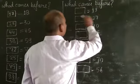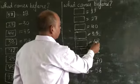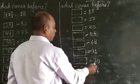What comes before 38? 27, 40, 35, 68, 91, 70, 56.